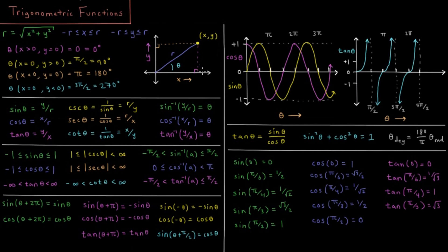Together these form a right triangle. We have our length r, the distance of that point from the origin. The height is y, the base length is x, and there will be some angle that this point makes with the plus x axis, this angle being called theta.